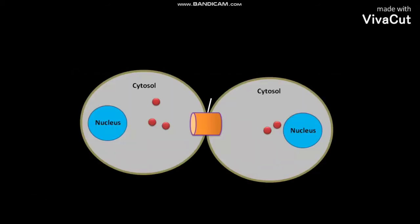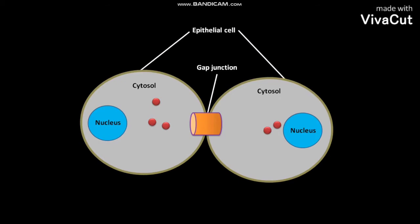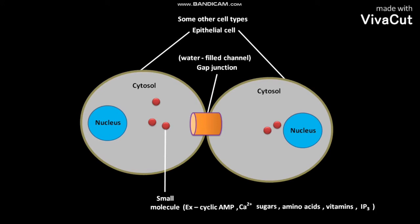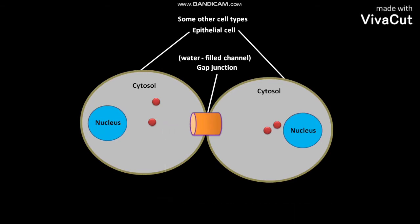This is a gap junction that directly connects the cytosols of two adjacent epithelial cells or some other cell types. The gap junction is a water-filled channel. The cytosolic small molecules like cyclic AMP, Ca2+, sugars, amino acids, nucleotides, vitamins, and inositol triphosphate (IP3) are exchanged through the gap junction.